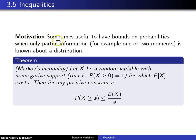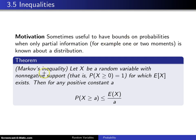Here is the motivation. Sometimes it's useful to have bounds on probabilities when only partial information is available. For example, maybe one or two moments are known about a distribution. When one moment is known that will lead to Markov's inequality, and when the first two moments are known that will lead to Chebyshev's inequality.